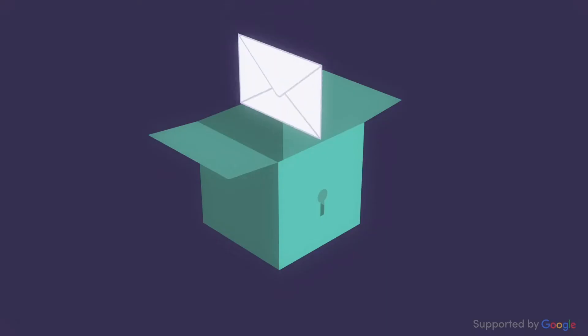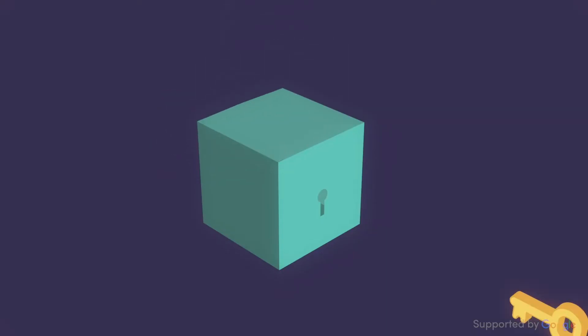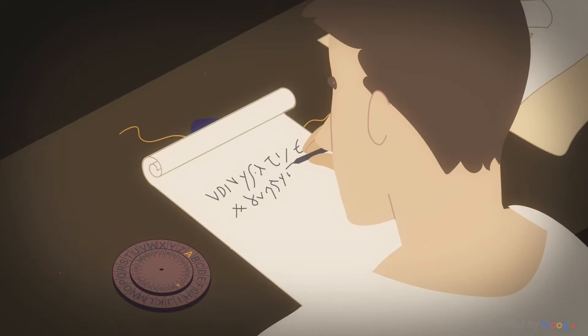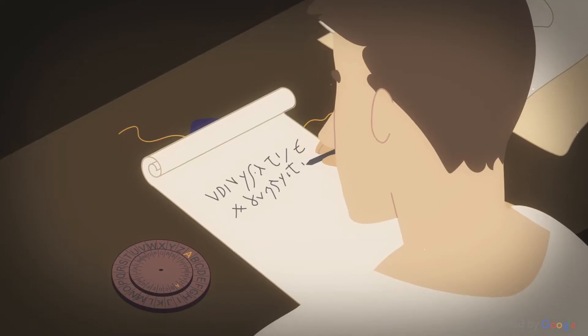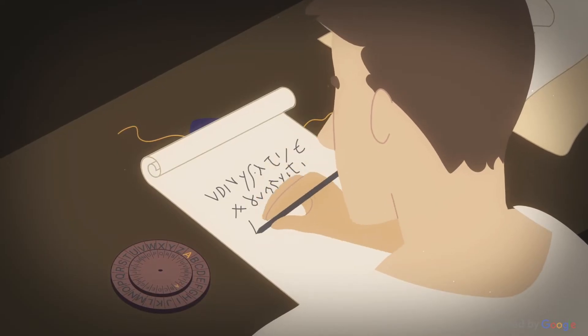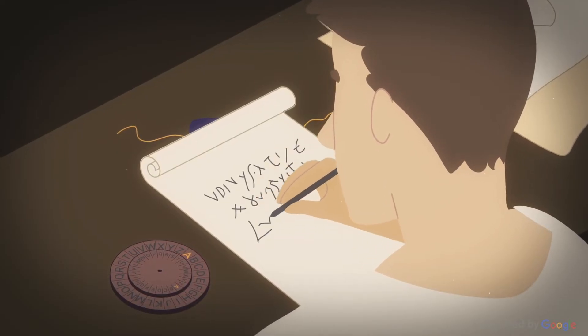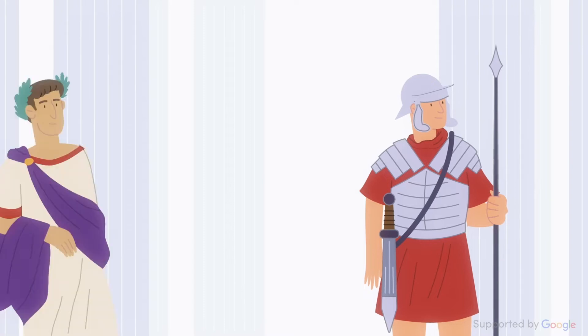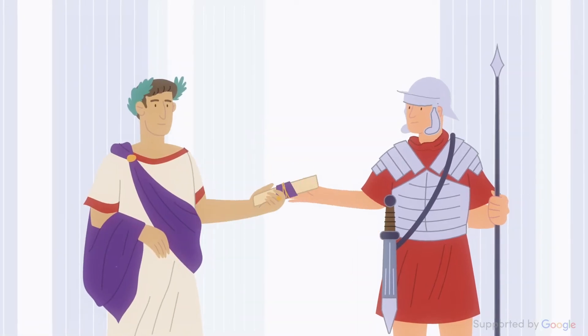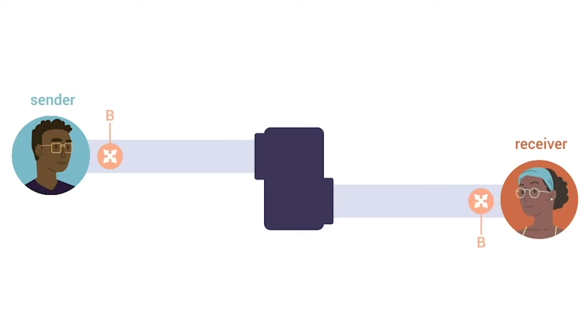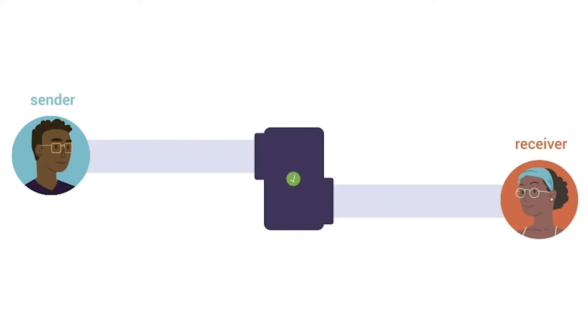How can you prevent your online messages from being read by hackers? How did German spies decipher British secrets during World War II? How can you break this user cipher? What is quantum cryptography?